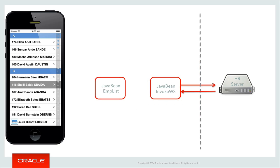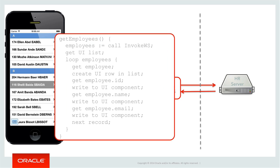Then we'd need another Java bean to fetch and hold the list of employees. This would be invoked from the screen when it's first rendered, and it would have a method that works as the binding between the user interface list, its rows, and the web service call. That method would invoke the remote web service to retrieve all the employees, get a handle on the actual UI list component, and for every employee returned, create a row in the UI list — getting the employee ID, writing it to the row, getting the name, writing it, and stepping onto the next record until all employees are written.